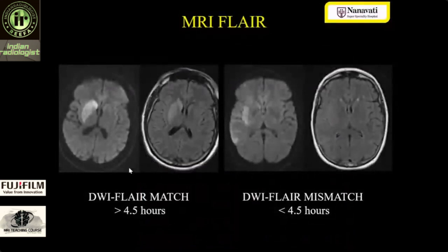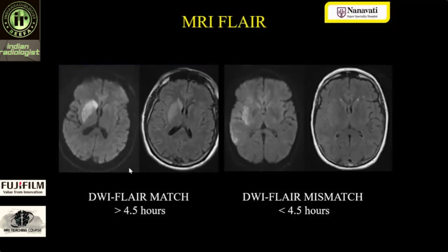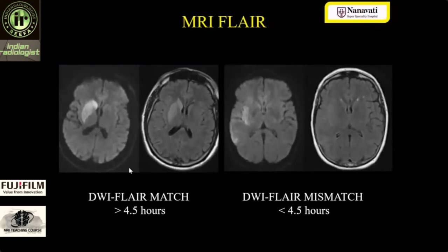The next very important sequence is FLAIR. We do FLAIR to see whether what we are seeing on diffusion is also visible on FLAIR images or not. This is very important in cases of wake-up stroke, because the time interval cannot be based upon clinical findings alone — the patient was sleeping and woke up with features of stroke. The neurologist relies on what we say: if the infarct is FLAIR-negative, they confidently go ahead with active intervention; if it is FLAIR-positive, they expect potential post-thrombolysis hemorrhage and do not proceed with active intervention.